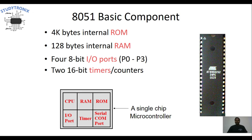The next peripheral is a timer. This timer is a 16-bit timer and there are two such timers. The timer can be operated in two modes: timer mode and counter mode. In timer mode, it is used for generating time delays, whereas in counter mode it is used for counting external clock pulses. Both timers are 16 bits, so the range is 0000h to FFFFh.